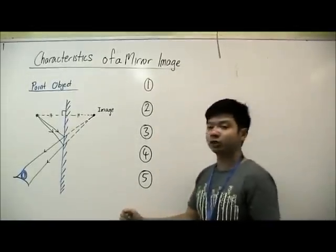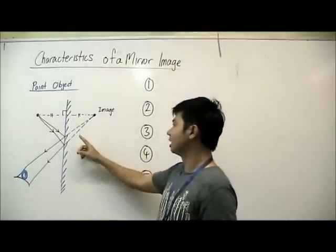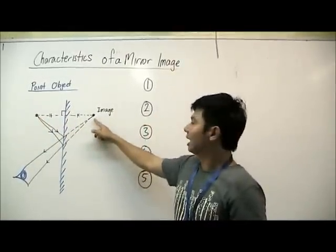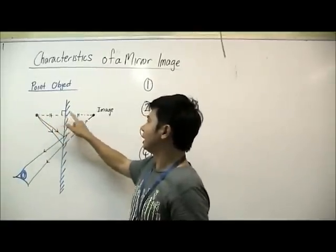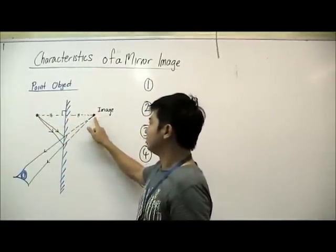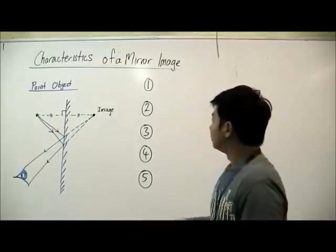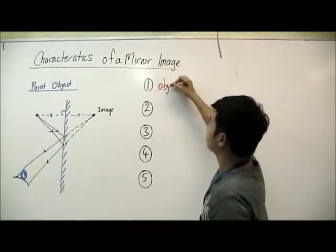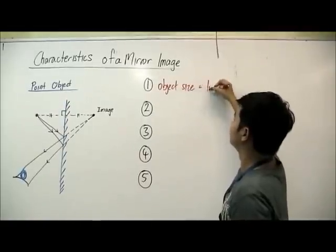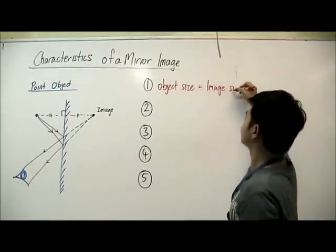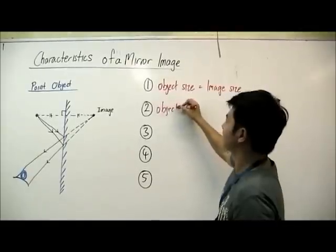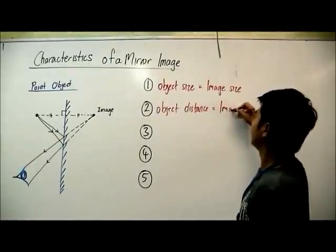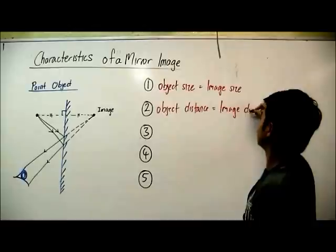There are altogether five. First of all, let's look at the ray diagram that we have drawn earlier on. We find that the object size and the image size, they are the same. And the distance between the object to the mirror and the distance between the image to the mirror, they are the same. So with this, we can write down the first two characteristics: object size is equal to image size, and the object distance is equal to image distance.